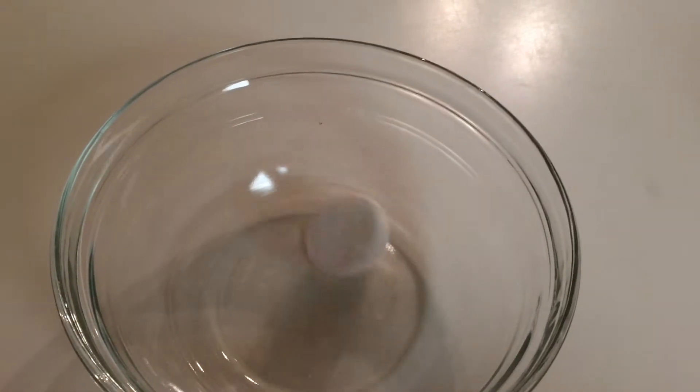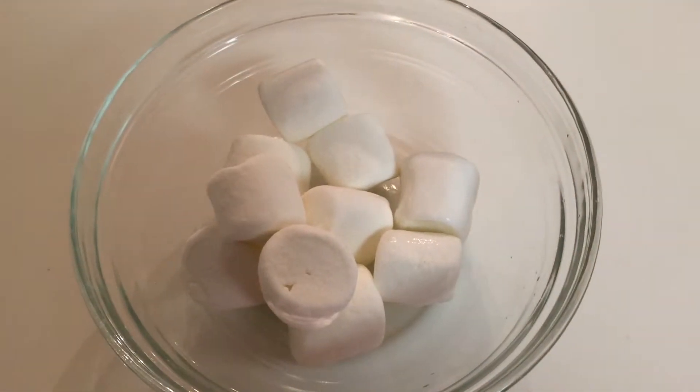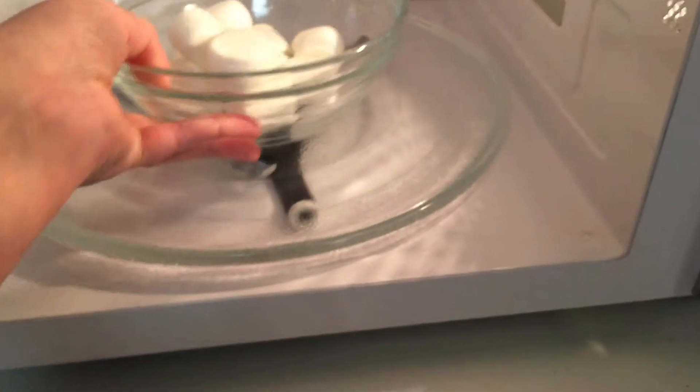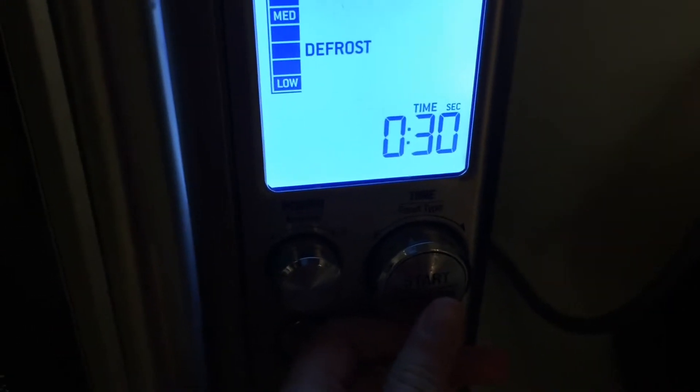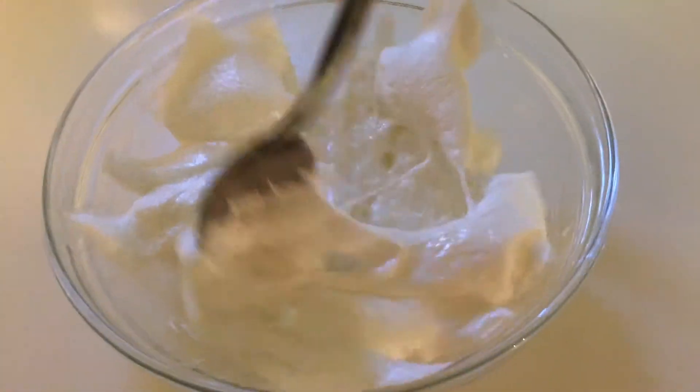In the microwave-safe bowl, add your marshmallows and a little bit of the water just to moisten off the marshmallows. Pop your marshmallows into the microwave in 30-second intervals. I only have to do this once because my microwave is very strong. Stir it all up until it's the right consistency.